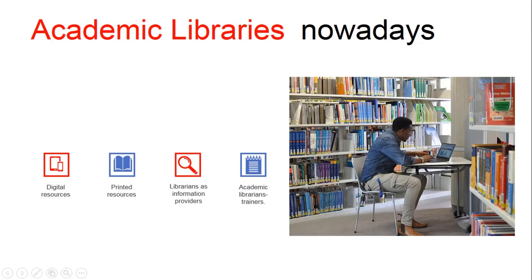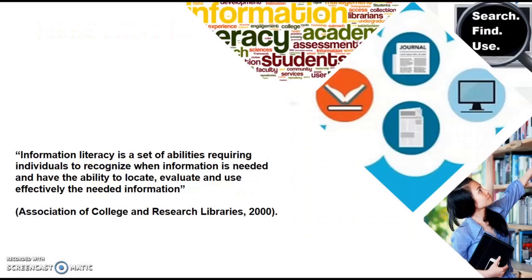Academic librarians are becoming teachers, lecturers, trainers, and learners, and they are becoming part of the academic community more than a community of administrative staff. Information and digital literacy is a set of abilities requiring individuals to recognize when information is needed and have the ability to locate, evaluate, and use effectively the needed information. This is a working definition which we were using during our workshop.